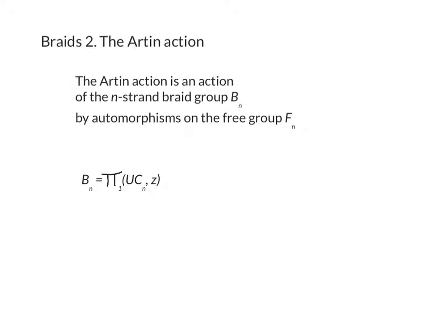The two key geometric ingredients are that these two groups, BN and FN, arise naturally as fundamental groups of some spaces. We saw in the last video that the braid group on n-strands is the fundamental group of the unordered configuration space on n points, with base point being some configuration Z, which is a collection of points Z1, Z2, up to ZN.